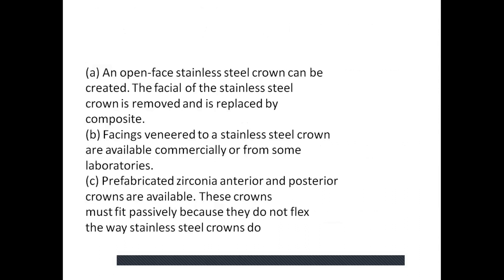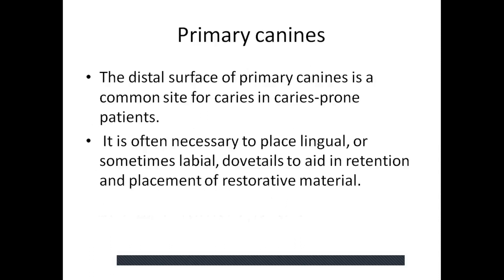Primary incisors with excessive loss of tooth structure may require stainless steel crowns, and improved aesthetics may be obtained in several ways. An open-faced stainless steel crown can be created — the facial portion of the stainless steel crown is removed and replaced by composite. Facing veneers for stainless steel crowns are available commercially as well as from labs. Prefabricated zirconia anterior and posterior crowns are also available; these crowns must fit passively because they do not flex. For the primary canines, the distal surface is a common site for caries in caries-prone patients. It is often necessary to place lingual and sometimes labial dovetails to aid in retention and placement of the restorative material.